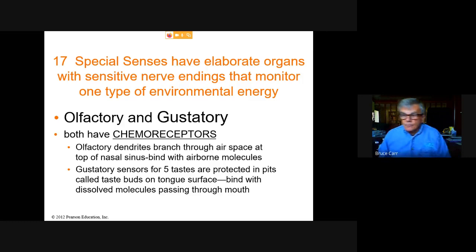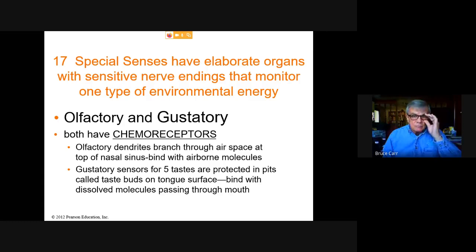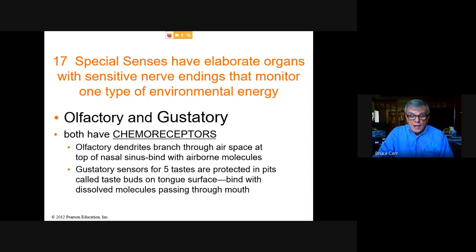The chemoreceptors — olfactory and gustatory — work the same way: chemicals in the air bond to receptors in delicate membranes of the sensor cells. In the olfactory system, those are located in the olfactory epithelium in the nasal passage. The gustatory senses are on the surface of the tongue, where they are exposed to the chemicals that dissolve in our saliva as we eat.